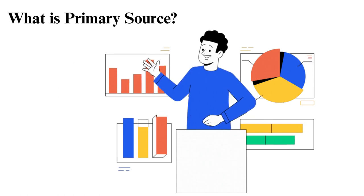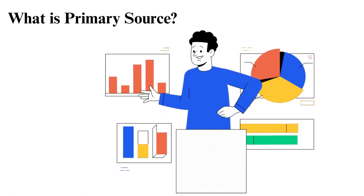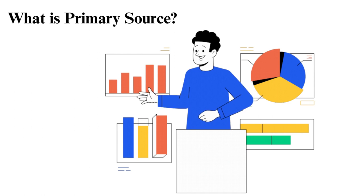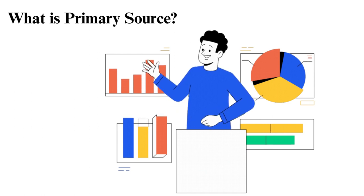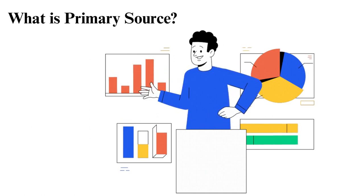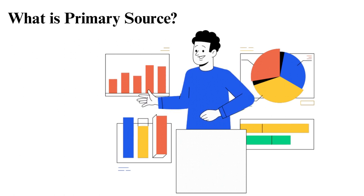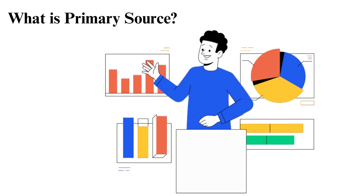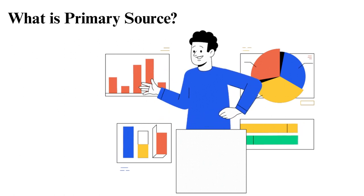Some examples of primary sources include unpublished sources such as letters, memoirs, speeches, journals, manuscripts, interviews, all unpublished works, diaries, autobiographies by famous people, eyewitness accounts, and published pieces written soon after the fact.